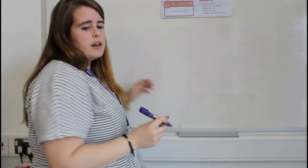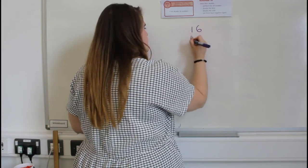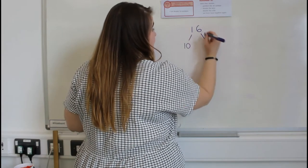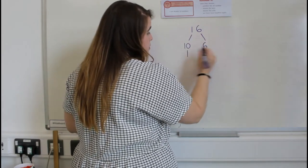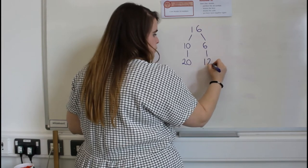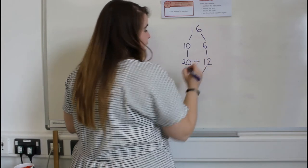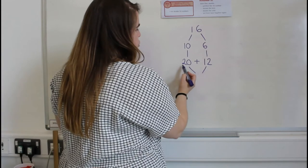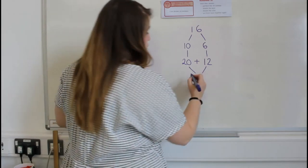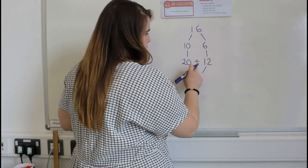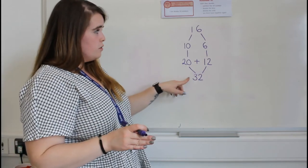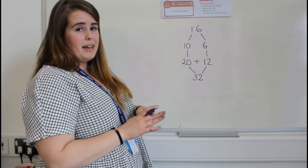Let's try another example: sixteen. We follow the exact same method — partitioned is ten and six. Double ten is twenty, double six is twelve. We need to put it back together by adding. Twenty add twelve: twenty add ten is thirty, and then I've got a two — thirty-two. So you've got to be very careful to add these back together afterwards.